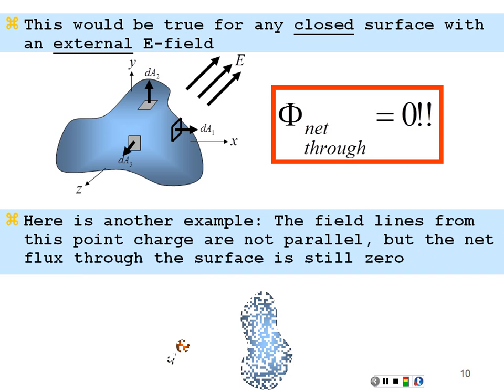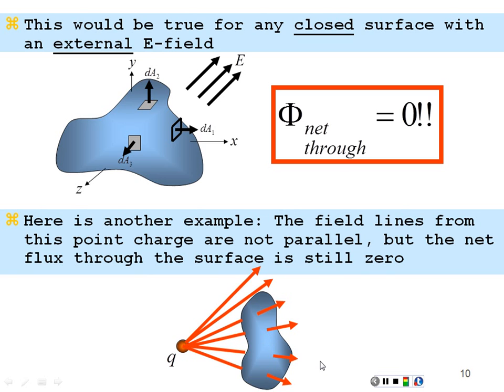Here's another example: a closed surface near a positive point charge. Point charges produce electric field lines going outward radially in all three-dimensional directions. In the vicinity of this closed surface, flux lines go in on one side and come out on the other side. Whatever number of lines going in on one side are coming out on the other side, so the net flux is still zero — even though the lines are not parallel. So up to this point, the net flux for external sources has been zero.